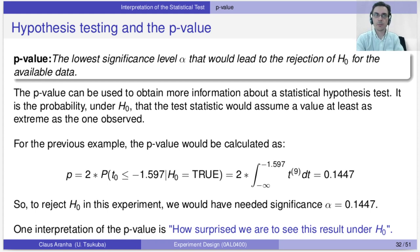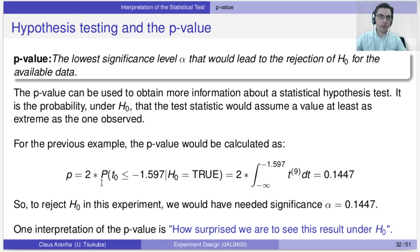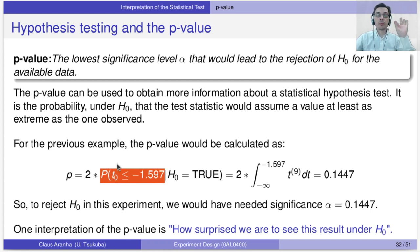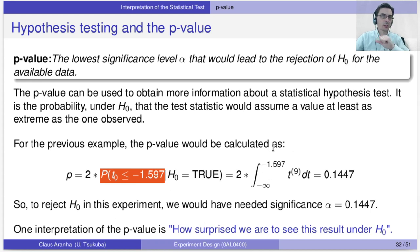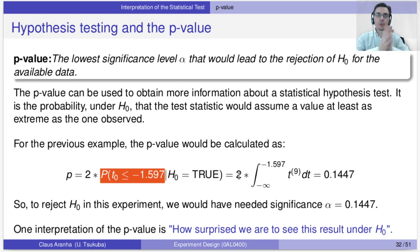How do we calculate the p-value? Going back to the example from the previous video, the p-value is the probability that the test statistic would be less than the value observed when the null hypothesis is true. It's calculated as an integral from minus infinity to the observed value of the t-distribution we're using, multiplied by 2 because we're using a two-tailed test. I recommend you look up the difference between one-tail and two-tail tests on your own.